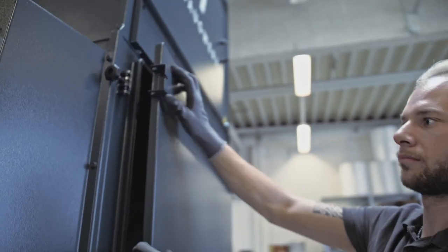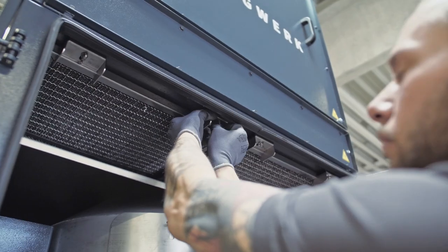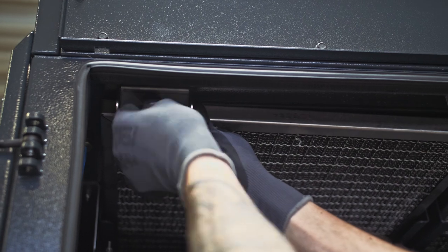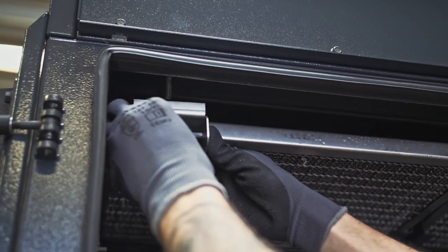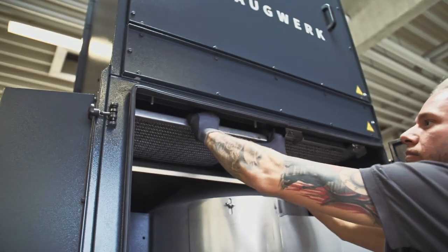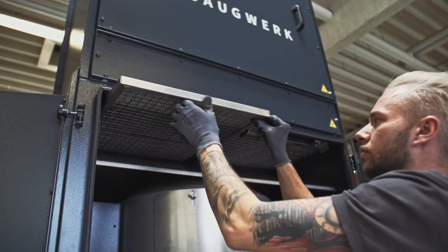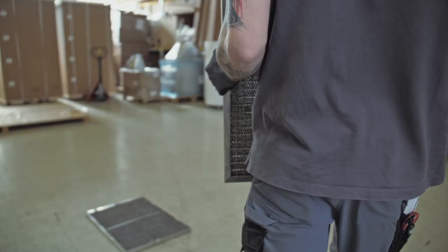Open the inspection door and untighten the wing nuts on the clamping hooks of the filters. Pull out the filters and put them aside, but make sure not to pull them out overhead as they are covered and filled with dirt.